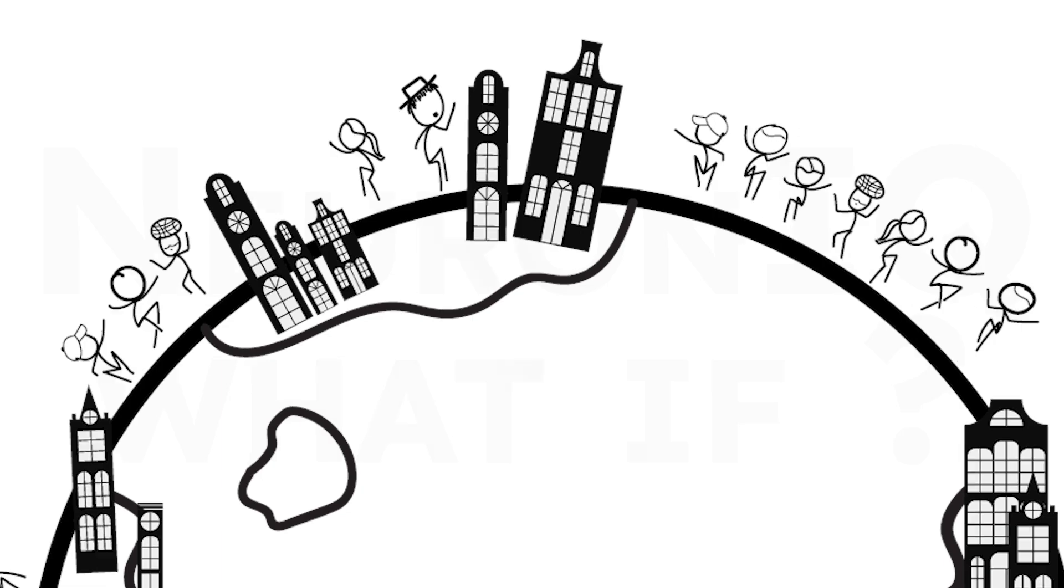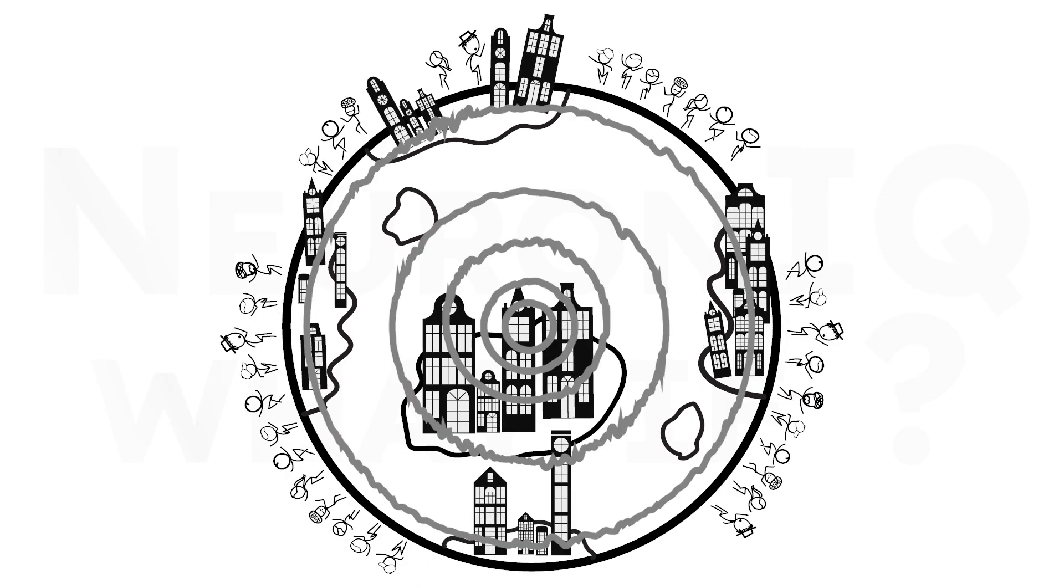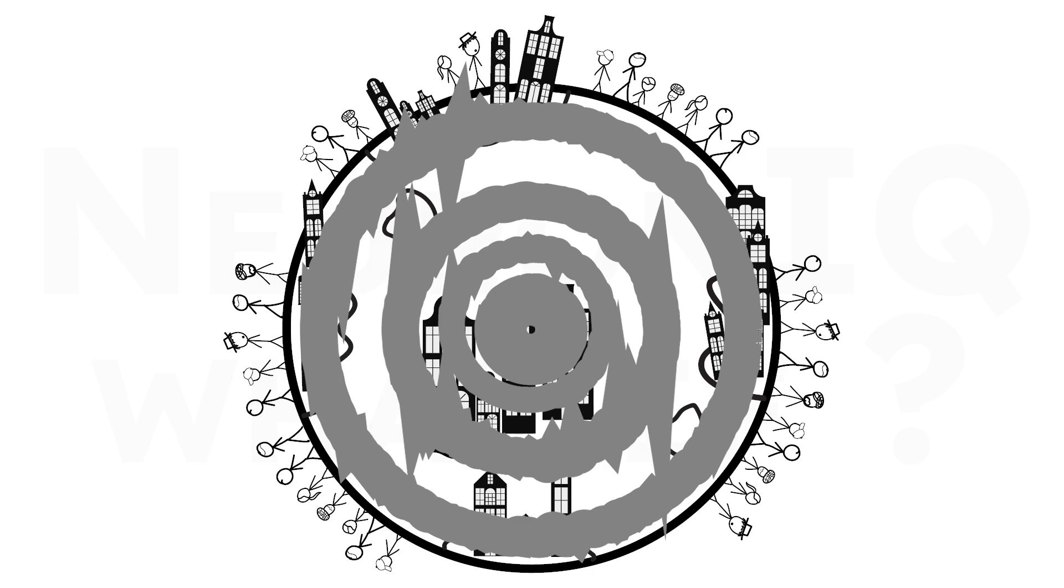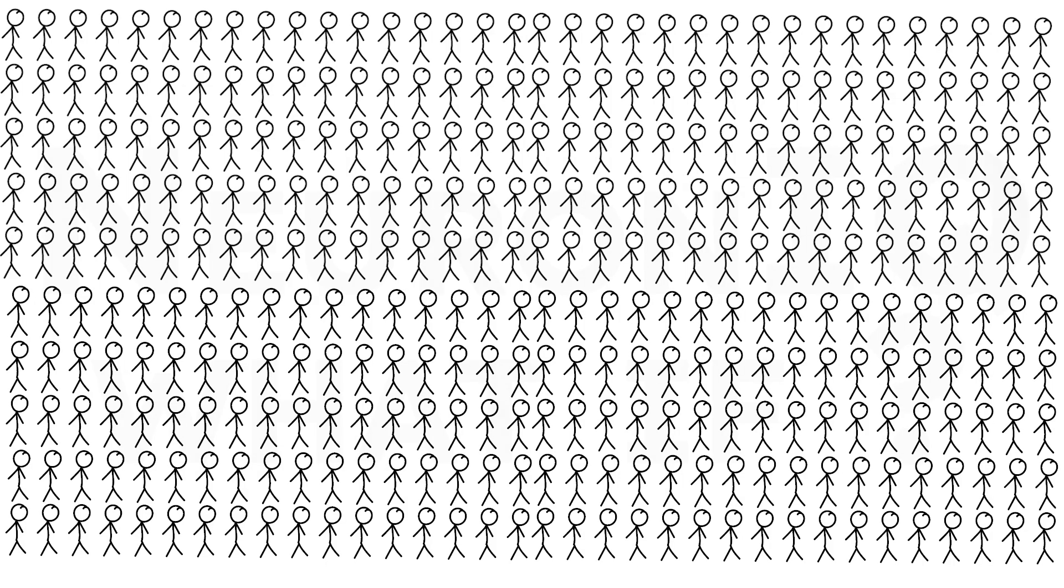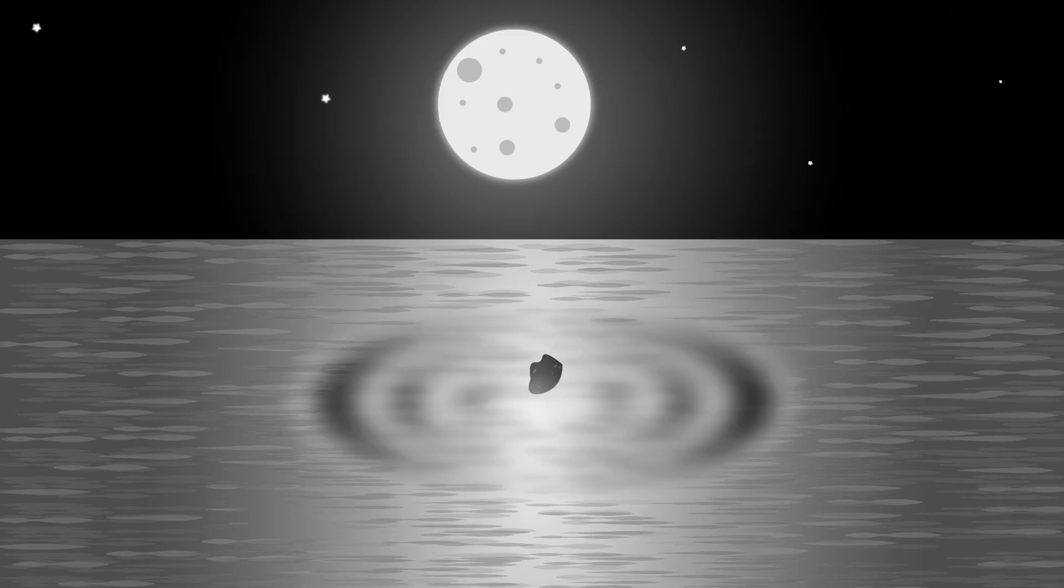The concept of everyone jumping at the same time might sound like a fun thought experiment, but it's also one of those questions that forces us to think about the incredible scale and interconnectedness of our planet. First off, can 8 billion people, even if perfectly coordinated, generate enough energy to actually make a noticeable impact? Or would it be like throwing a pebble into the ocean?